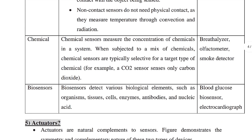Chemical sensors measure the concentration of chemicals. When subject to a mix of chemicals, chemical sensors typically select for a target type of chemical. For example, a carbon dioxide sensor targets CO2 specifically. Examples include breathalyzers, olfactometers, and smoke detectors.